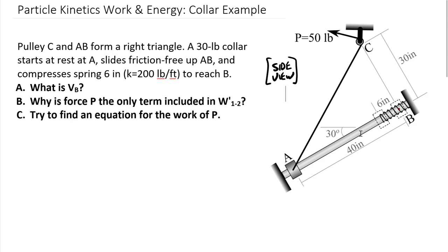Now as the collar gets close to B, it's going to hit this spring at about six inches from B, and it's going to come here to B, which is basically down here below point C. We actually have a right triangle, A, B, C is a right triangle, and we want to know what is the velocity at B. We do not assume that it stops, but we do know that the spring constant is 200 pounds per foot of this spring.